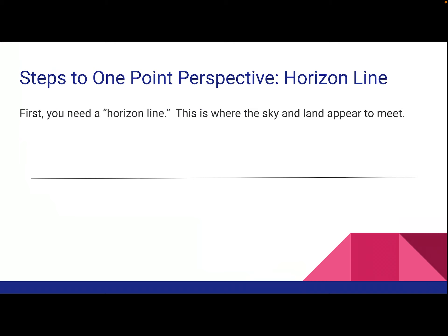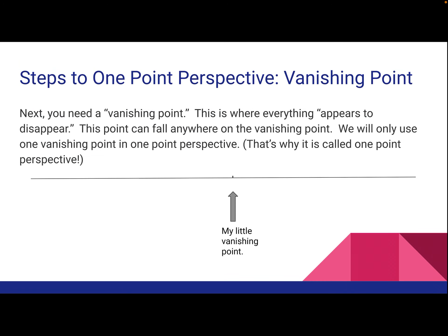There are some basics with one-point perspective that I'll go over with you on Zoom, but just so you have an idea: we're going to be drawing shapes or letters in one-point perspective. First, you need a horizon line — this is where the sky and the land meet. If we were in the art room, I'd have you look out the window at the mountains and the sky. The horizon line is horizontal, going from left to right, perfectly straight.